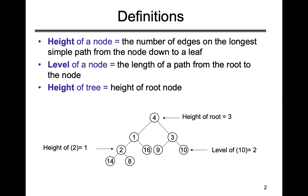The first node is the root node — here 4 is the root node. Internal nodes containing children are also called parent nodes. So 1, 3, and 2 are parent nodes because they contain children — left child and right child. A heap is a binary tree, meaning any parent node has only two children. For example, 4 as root contains only 1 and 3 as children; 1 contains 2 and 16; 3 contains 9 and 10.